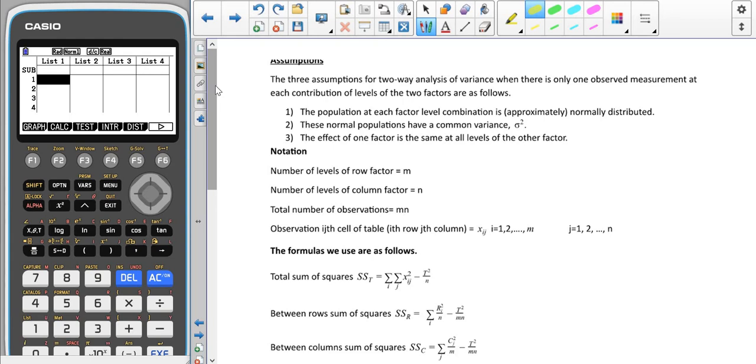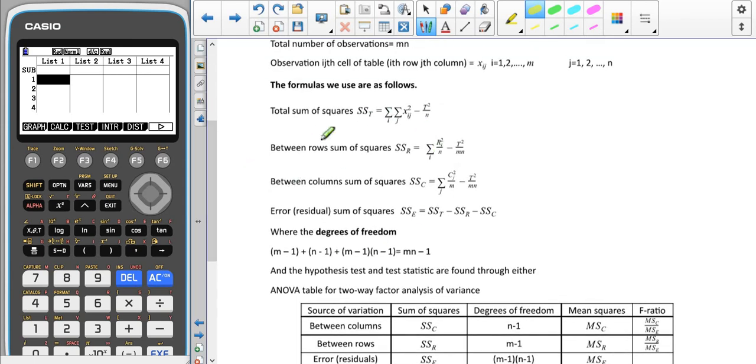Again we have some notation and formulas, and again some of these are given to us in the formula booklet on page seven. I am going to show how to do the graphical calculator method for this one just to save a bit of time, as most of my pupils use the graphical calculator. But you can do it via an extension of the non-graphical calculator method shown in the one-factor analysis of variance video. I'm also going to show a non-calculator version for finding the Latin square design.